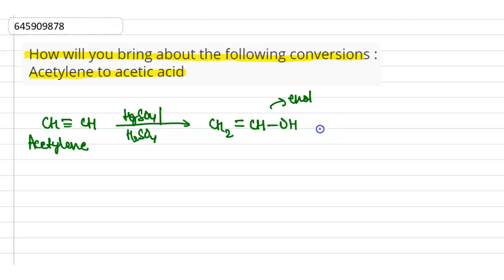Through tautomerism, our product will be formed as aldehyde, and that is ethanal. When ethanal reacts with K2Cr2O7, that is an oxidizing agent, it will form carboxylic acid.